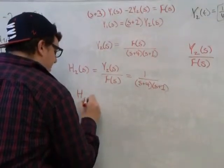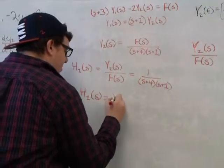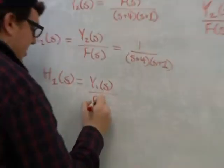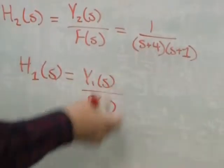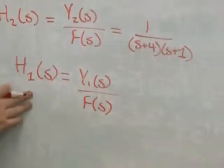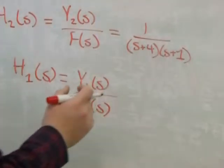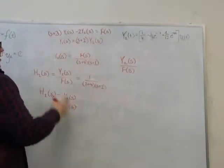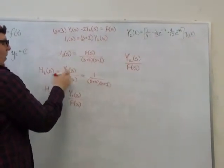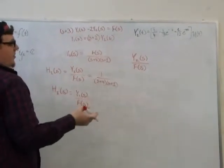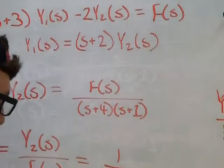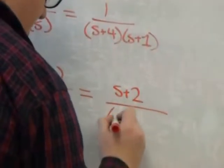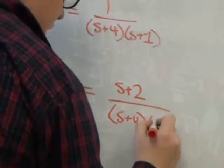So, if we're going to do the same thing for our first input, which is y1(s), we want to write this thing, y1 over f(s), which we'll call H1(s). And because we know the relation that y2(s) times (s+2) is y1, we should just be able to multiply y2/f by (s+2) to get y1/f. And in fact, we can do that. So we just end up with (s+2) over (s+4) times (s+1).